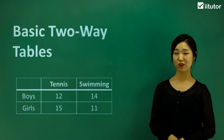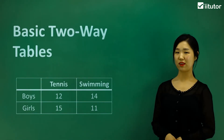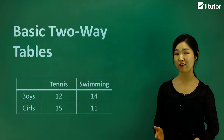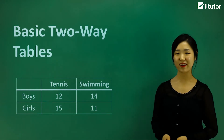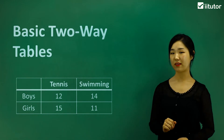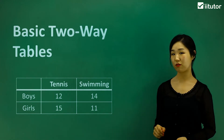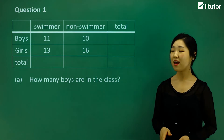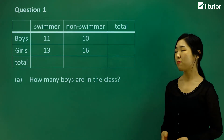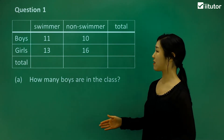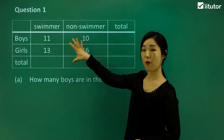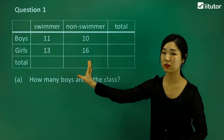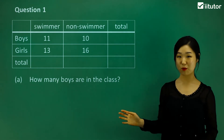Let's look at some basic two-way tables. These are frequently used in probability questions, so you have to know how to interpret them very closely. A two-way table goes one way and also the other way — it goes in a vertical direction and also a horizontal direction. That's why it's called a two-way table.